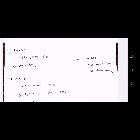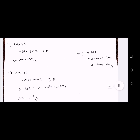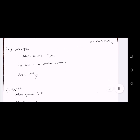Next sum: 69.48. After the point, the digit is 4. It is less than 5, so we write the whole number. Answer is 69.